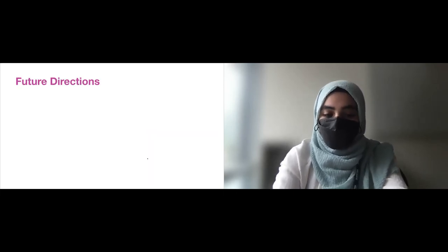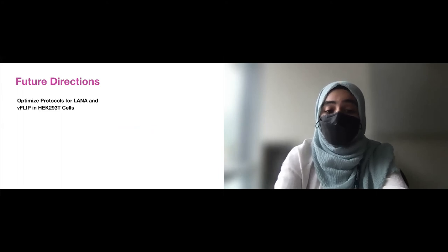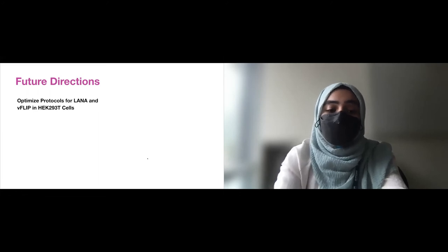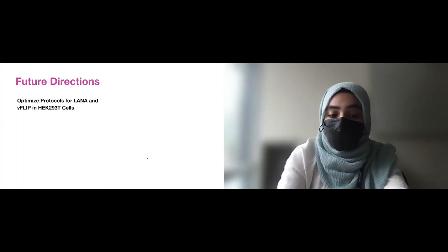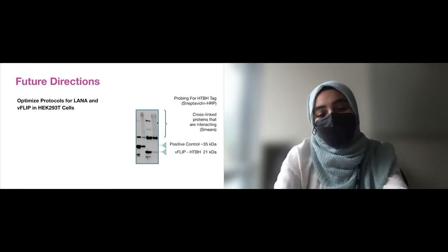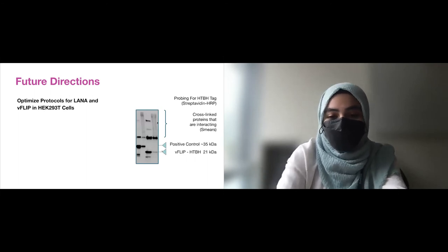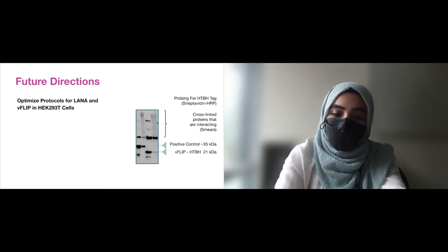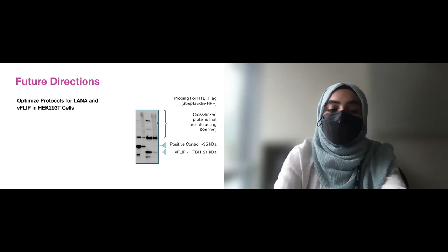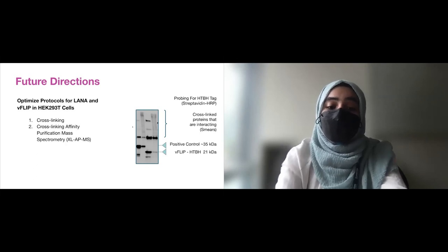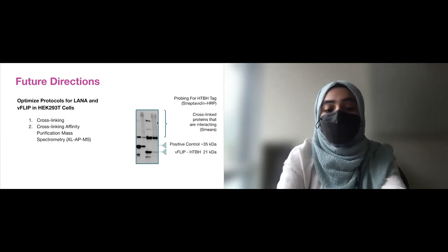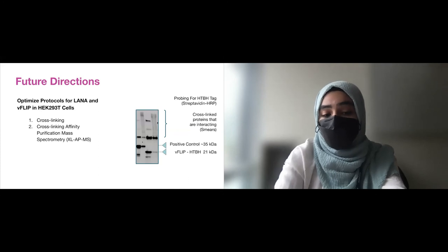So in the future, our goals are to optimize protocols for both HTBH tagged Lana and vFlip in HEK293T cells. This includes optimizing cross-linking conditions with vFlip. I did a preliminary cross-linking as the last experiment of my internship, and you can see that we can cross-link vFlip, and it forms protein interactions, which are these higher molecular weight bands on the gel. So the last component is doing affinity purification after cross-linking to pull down on vFlip, identify human protein-protein interactions and interaction interfaces by mass spectrometry analysis.